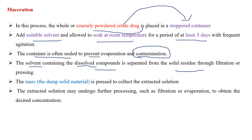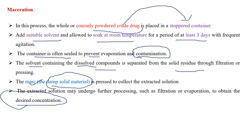We obtain a solution containing the desired component. We press the solid residue — this residue is called marc — and collect additional liquid. The two liquids are mixed together and then evaporated. During evaporation, the solvent is removed and only the desired component is concentrated. This is the maceration process.